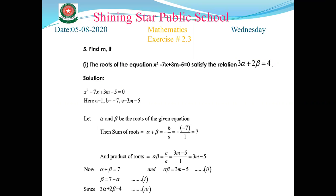Let's start question number five. We have to find the value of m when the relation 3α + 2β = 4 is given. The equation is x² - 7x + 3m - 5 = 0. Comparing with the standard form of the quadratic equation, we get a = 1, b = -7, c = 3m - 5.